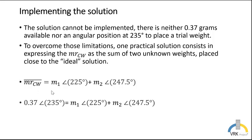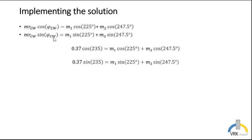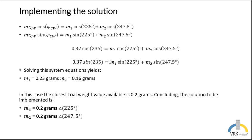So we have here a vector equation, and this vector equation can be expressed as two scalar equations. Again, we input the values, and we get our two equations with two unknowns, m1 and m2. We solve this system of equations, and we get that mass 1 is 0.23 grams, and mass 2 is 0.16 grams.